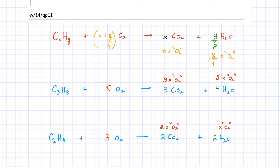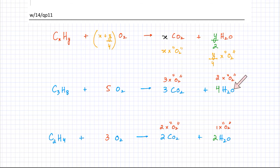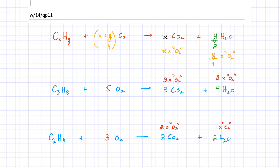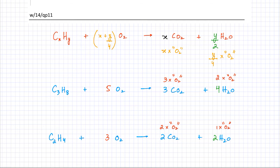The only tricky part is the oxygen. To summarize: three CO2 contains three O2 molecules, so to balance you need three O2 on the other side. Four H2O contains four oxygens, equivalent to two O2 molecules — that's half the number of water molecules. So if you have Y/2 H2O molecules, the number of O2 molecules needed is Y/4.